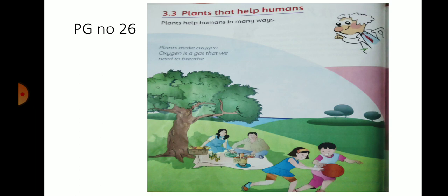Plants help humans in many ways. Plants make oxygen. Oxygen is a gas that we need to breathe. Plants oxygen banaatay hain. Oxygen gas maal saans lene ke liye bohat zaruri hoti hai. Oxygen ke bagair hum saans nahi le sakte aur hum zinda bhi nahi rahenge.